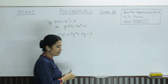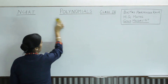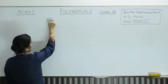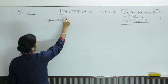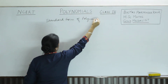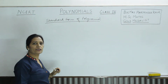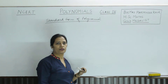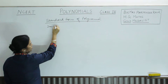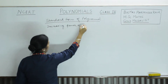Now we take the standard form of a polynomial. What is the standard form of a polynomial? Standard form means we have to write the polynomial in decreasing powers of the variable — decreasing powers of variables.